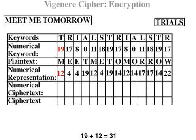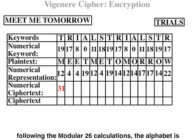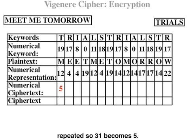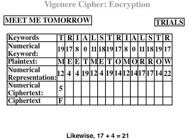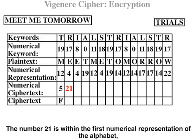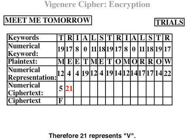Row 5 is the total of columns in the second and fourth rows added together using modular 26. For example, 19 plus 12 equals 31. As 31 exceeds the number of alphabetical letters, following the modular 26 calculation, the alphabet is repeated, so 31 becomes 5. The numerical representation of 5 is the letter F. Likewise, 17 plus 4 equals 21. The number 21 is within the first numerical representation of the alphabet, so modular 26 calculation is not required. Therefore 21 represents V.